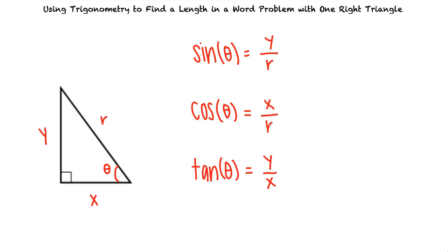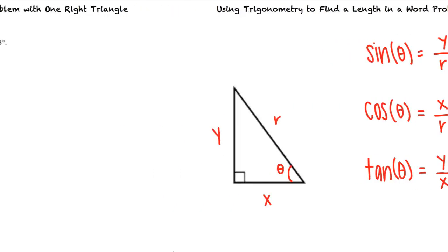Let's take a look at an example problem. A 14-foot ladder leans against the side of a house. The angle of elevation of the ladder is 63 degrees.